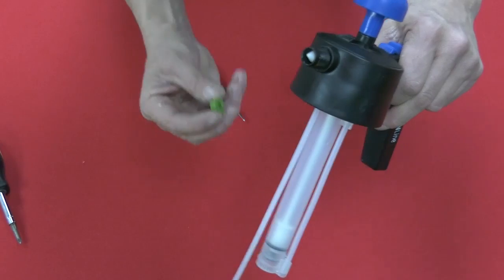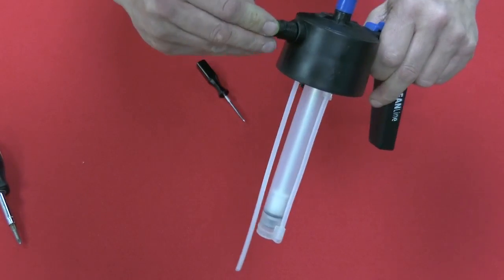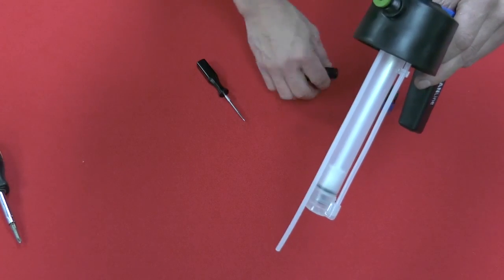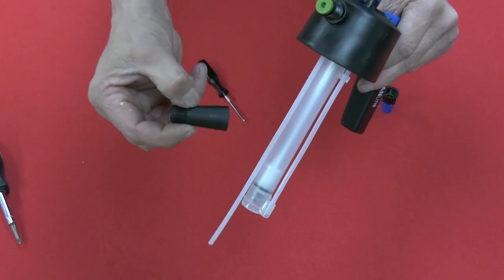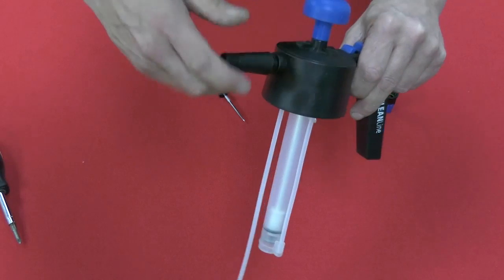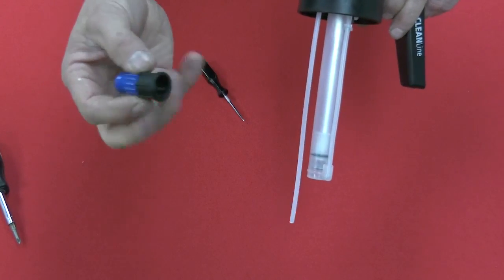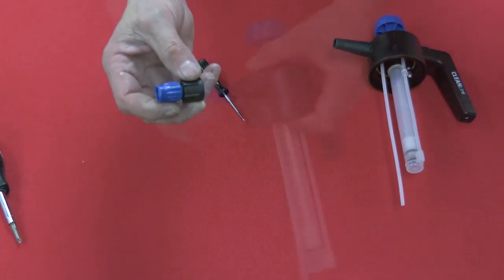I'm moving the plunger. Simply add the gasket, screw on the wand, and also your tip.